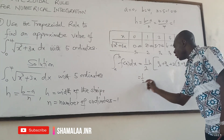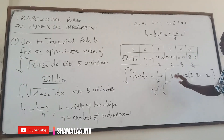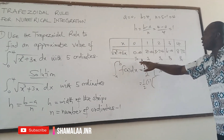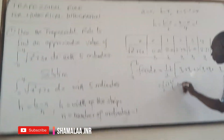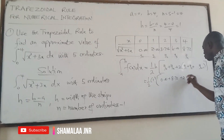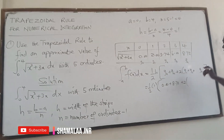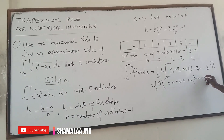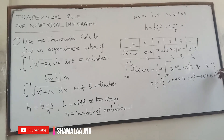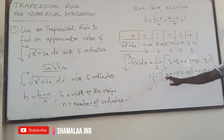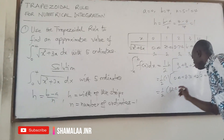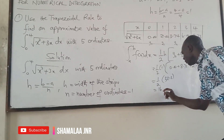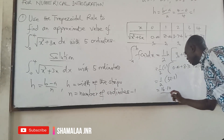Applying the formula with h=1: the integral is approximately equal to one-half times 1 times (y0 plus yn) plus 2 times the sum of the rest. From the table: y0=0.00, yn=8.72, and the rest are 2.00, 3.74, and 6.00. This gives one-half times (0.00 + 8.72 + 2 times 11.74), which equals one-half times 32.20, giving a result of 16.10, correct to two decimal places.